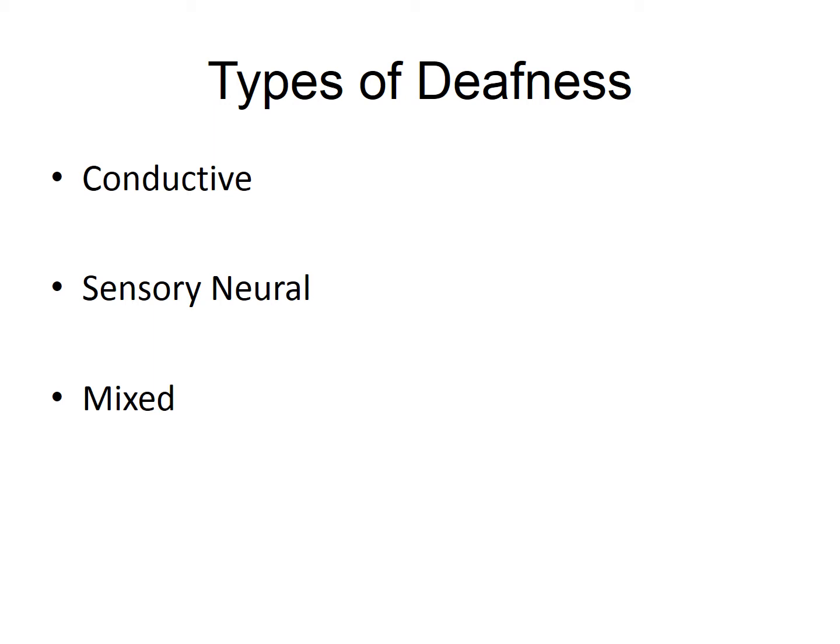The second type of hearing loss is sensorineural hearing loss. Most commonly this means that there has been damage to the hair cells in the cochlea. The more damage to the hair cells, the greater the hearing loss will be. This is a permanent hearing loss which can be present at birth or can happen through disease or trauma later in life. This sensorineural hearing loss, as we say, is often permanent.